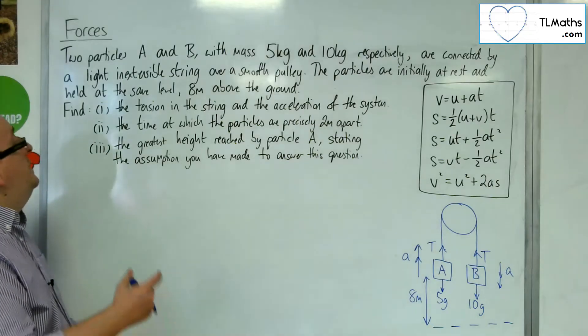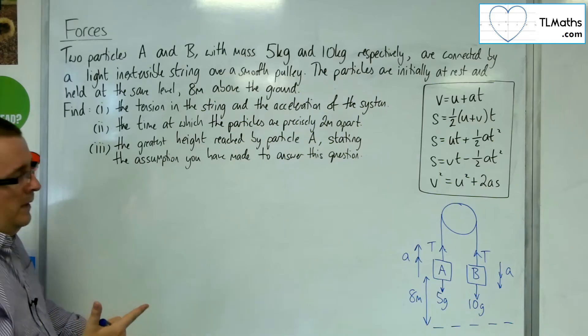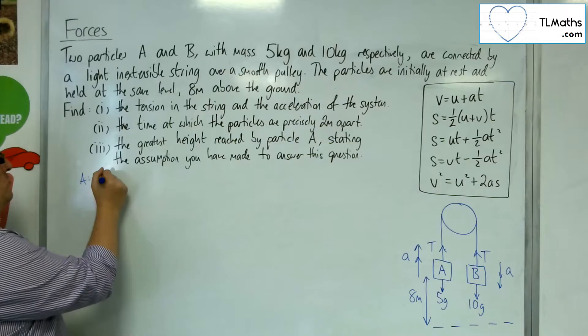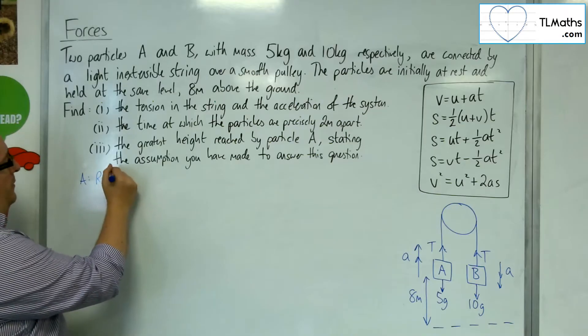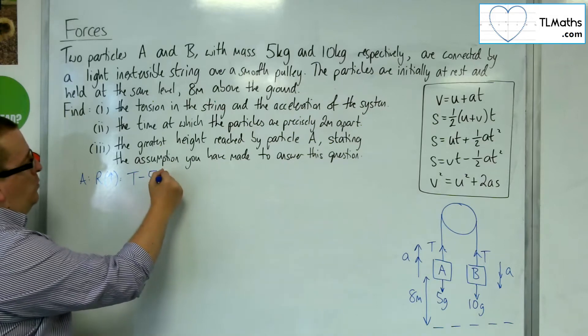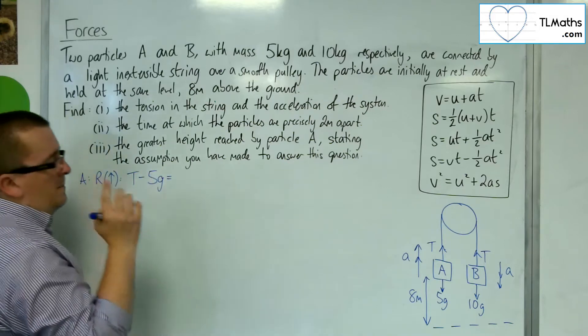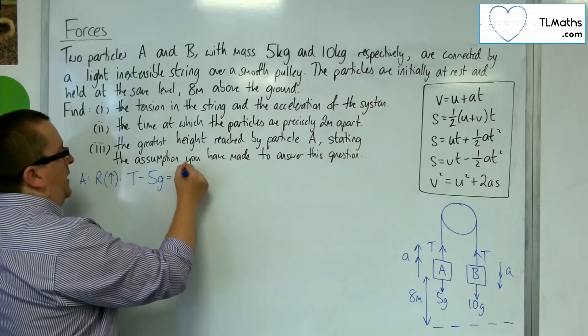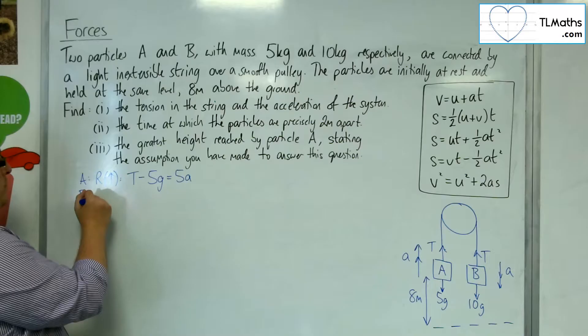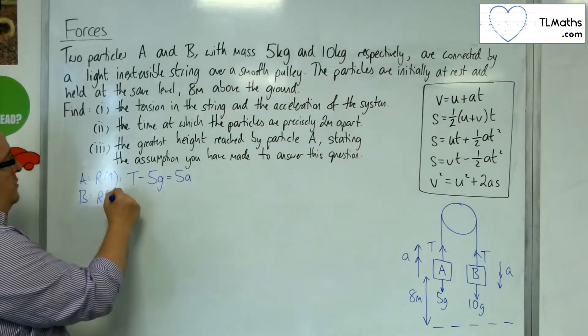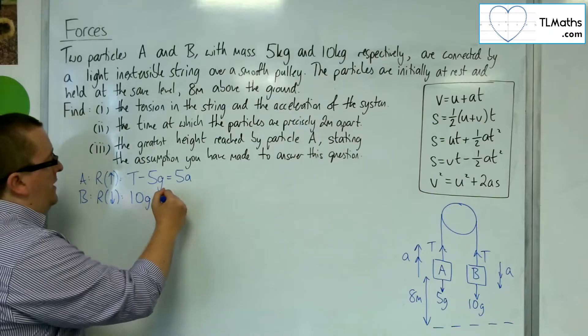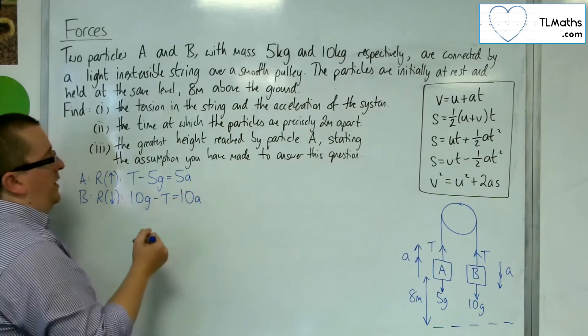We're first asked to find the tension in the string and the acceleration of the system. Okay, so let's look at particle A. And we're going to resolve taking upwards as positive. So, we've got the tension working upwards, we've got 5g working downwards, and we've got the mass times acceleration, so 5a. Then, if we take the second particle, particle B, and we resolve downwards, then we've got 10g take away t is equal to the mass times acceleration.